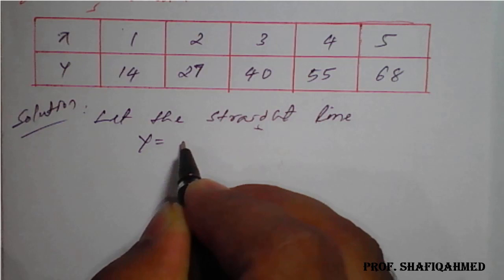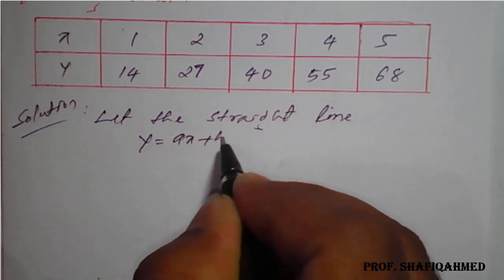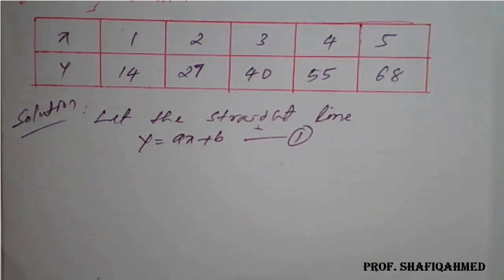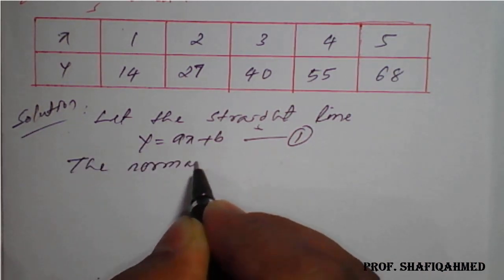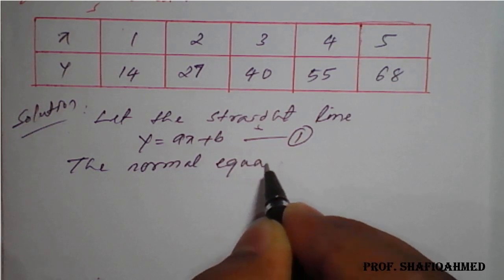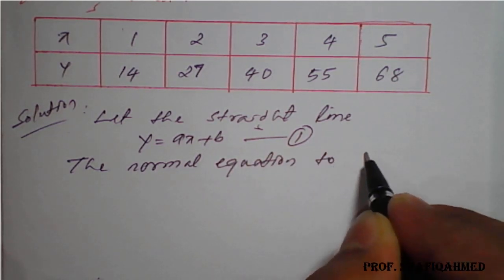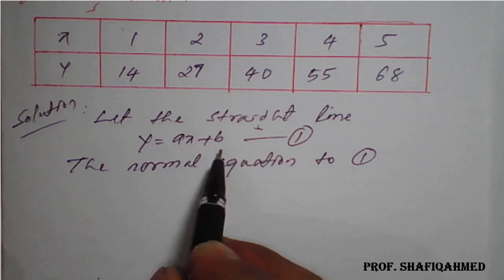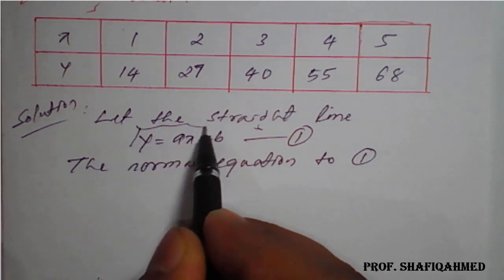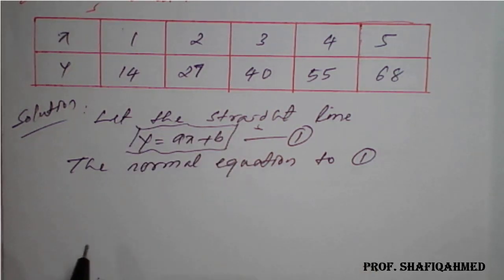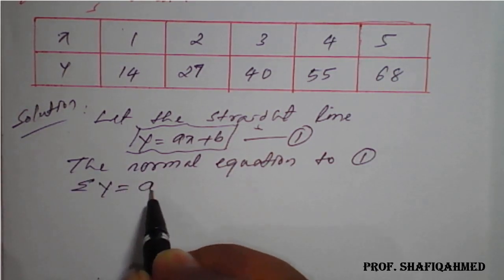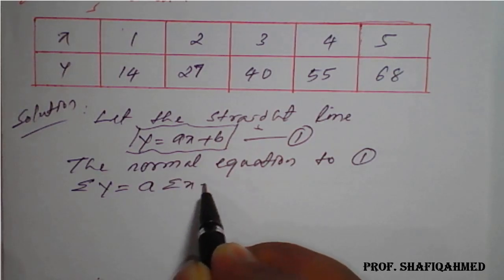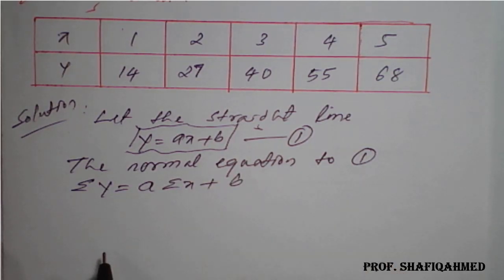The equation is y = aX + b, which is equation number one. We have to prepare a normal equation for this equation number one, so multiply both sides by summation. That is, summation y is equal to a, which is a constant, times summation X plus b.